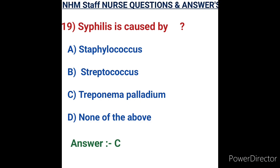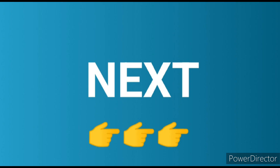Question number nineteen: syphilis is caused by. Options: A) Staphylococcus, B) Streptococcus, C) Treponema pallidum, D) none of the above. Staphylococcus and Streptococcus are responsible for wound infections, cystic fibrosis, and mastitis. Treponema pallidum enters through broken skin and mucous membranes and is a sexually transmitted bacterium causing syphilis, which is an STD. Option C, Treponema pallidum, is the correct answer.